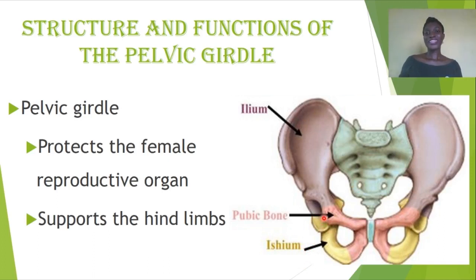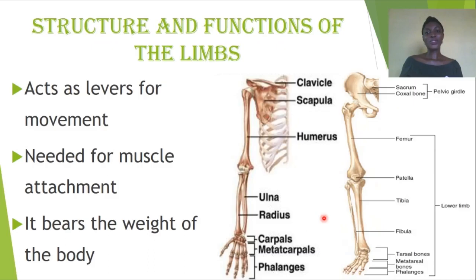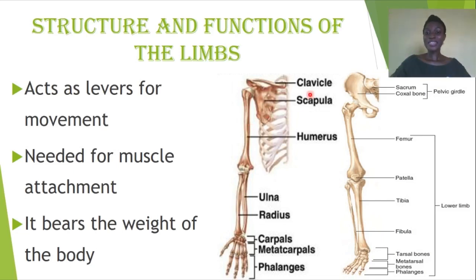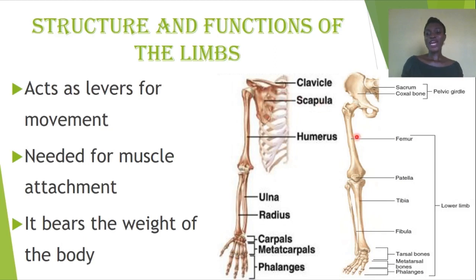The pelvic and pectoral girdles are very important and key to ensuring movement occurs. The final parts of the appendicular skeleton are the upper and lower limbs — the forelimbs being our hands, and the hind limbs being our legs. The limbs are divided into five parts, which is why we call them pentadactyl limbs — 'penta' coming from pentagon, meaning five.